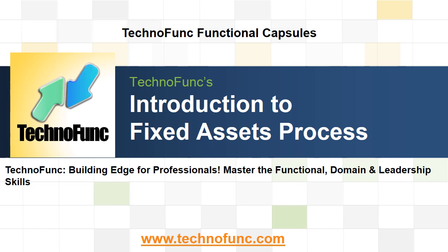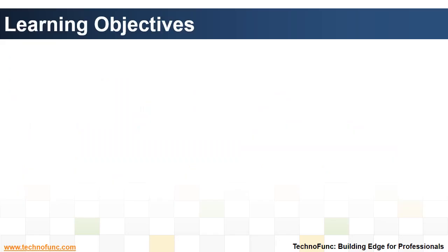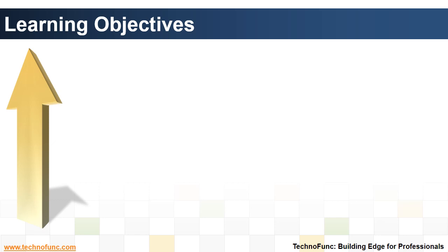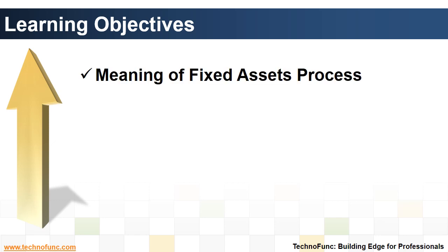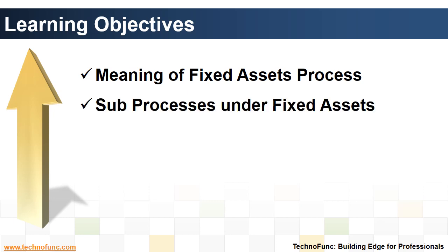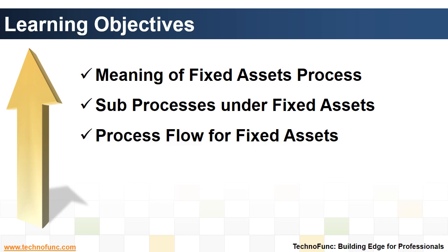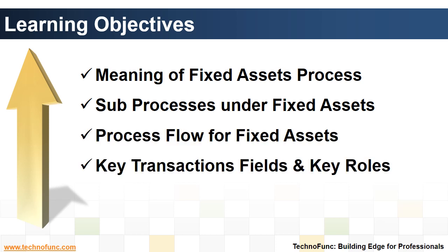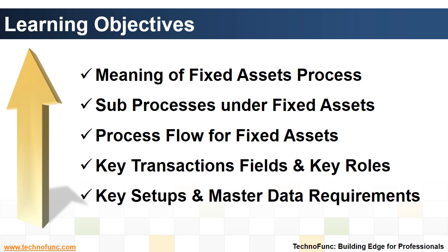In this video, we will explore the business process area known as fixed assets, also known as FA. Learning objectives for this lesson are: the meaning of the fixed assets process, sub-processes under fixed assets, process flow for fixed assets, key transaction fields and key roles, and key setups and master data requirements.